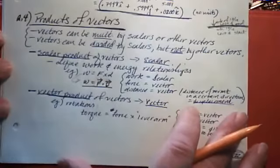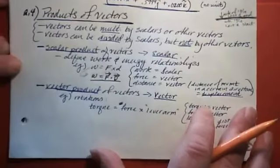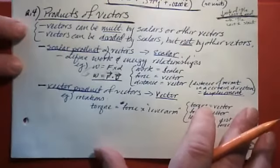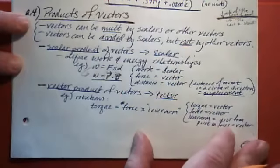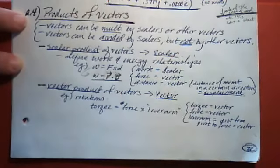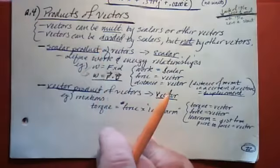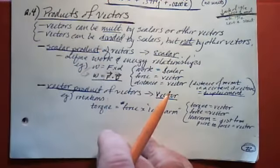There are actually a couple of different ways that you can multiply vectors together, and it matters which way you're using because the result is different in each case. With regular numbers, which are actually scalars, you can multiply them together really only one way. Three times five means one thing and basically one thing only, and the result is always 15. But with vectors, that's not always the case. There are a couple of different ways that you can multiply vectors together, and you'll end up with something different depending on how you do it.